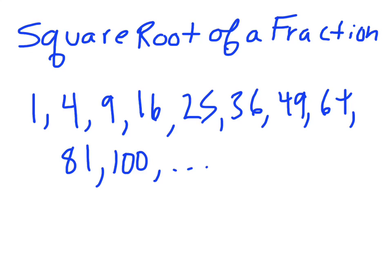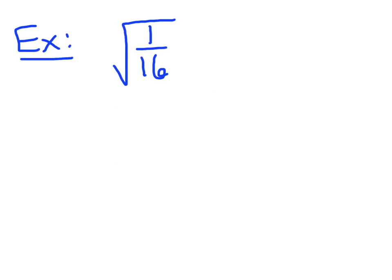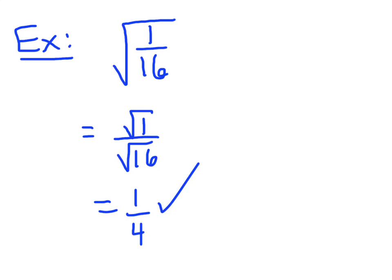Finding the square root of a fraction is really no different than finding the square root of one of these numbers. We know the square root of 36 is 6. So if you know your perfect squares, finding the square root of a fraction is pretty simple. Starting with the square root of 1 over 16 — you take the square root of the top number and the square root of the bottom number. The square root of 1 is 1, the square root of 16 is 4, so the answer is 1 over 4.